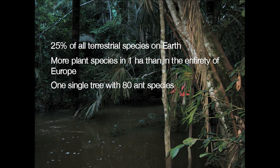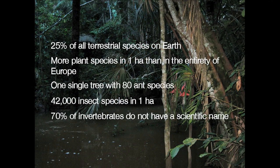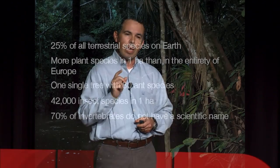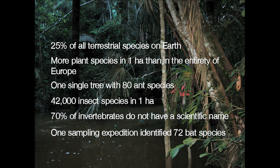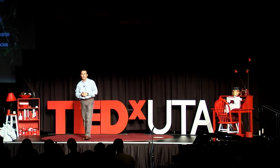In 100 by 100 square meters, I would find more plants than in the entire European continent. In a single tree, I can find 80 different species of ants. Multiply insects by the number of plants, and you get a staggering 42,000 different insects in a hectare of the Amazon. In a single sampling expedition, we found 72 different species of bats — nearly double the 42 species in the entire U.S.